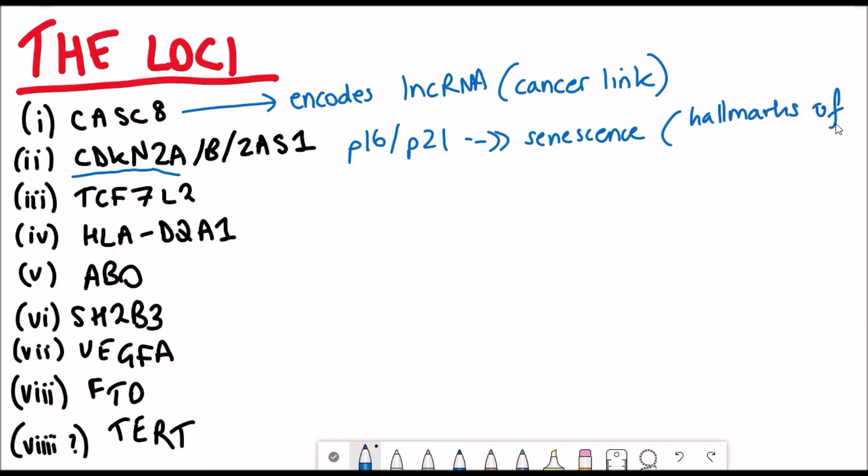And interestingly, the 2AS1 is another long non-coding RNA, and so this kind of raises the point that some of these variants aren't mutations necessarily in the genes themselves, but are more about regulating the expression of these different genes instead.